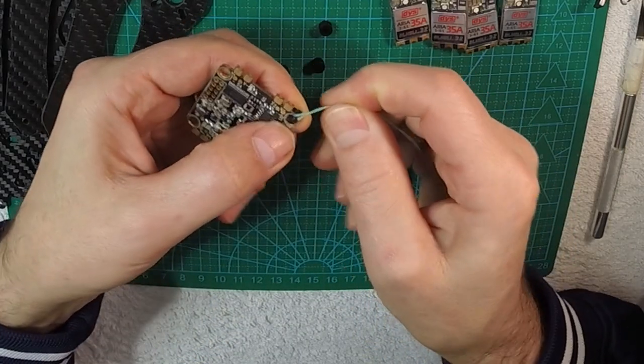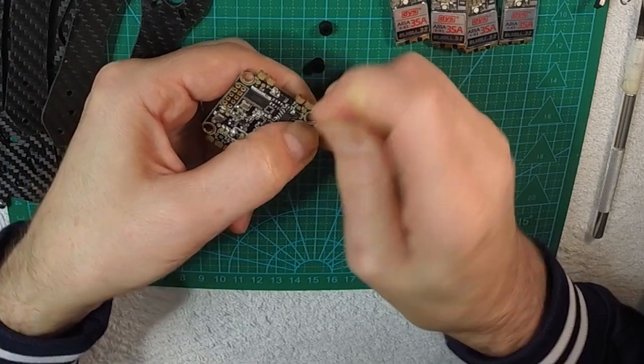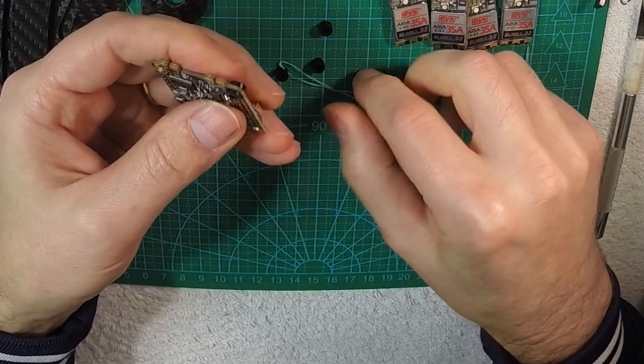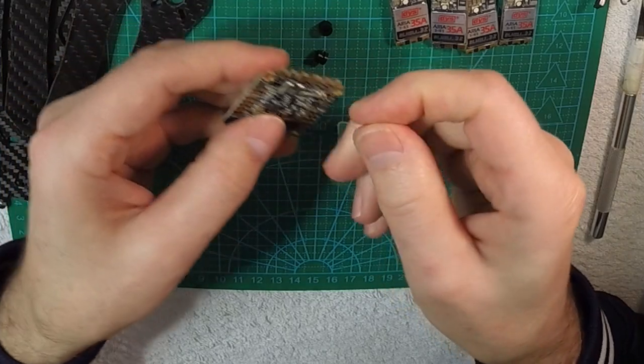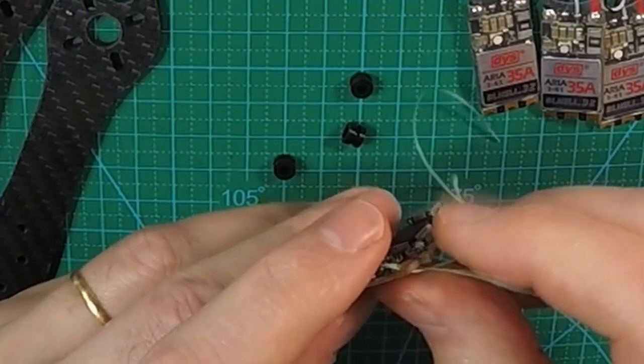Then carefully pull the floss until the grommet snaps into place. Have special attention if your floss or line is too thin, because sometimes it cuts the damper. I'll do one more so you can see it.